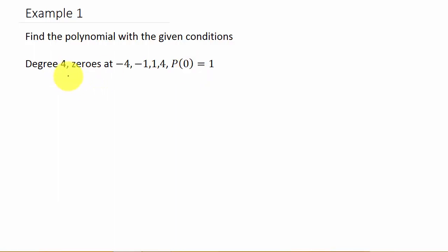Here we have a degree 4 polynomial and we have zeros at negative 4, negative 1, 1, and 4, and we have the condition that p of 0 is equal to 1.